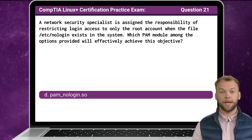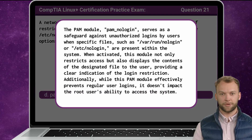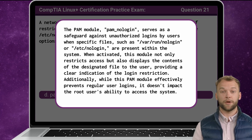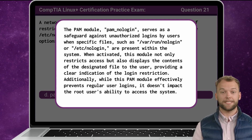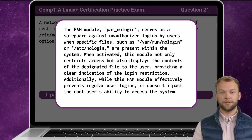The answer is D: pam_nologin.so. The PAM module pam_nologin serves as a safeguard against unauthorized logins by users when specific files, such as /var/run/nologin or /etc/nologin, are present within the system. When activated, this module not only restricts access but also displays the contents of the designated file to the user, providing a clear indication of the login restriction. Additionally, while the PAM module effectively prevents regular user logins, it doesn't impact the root user's ability to access the system.